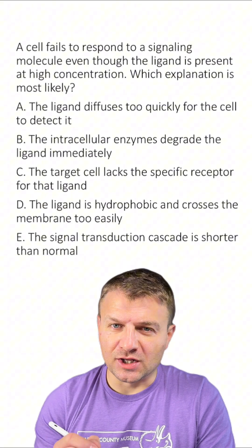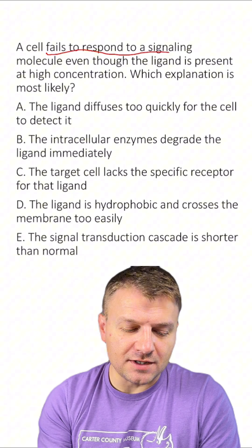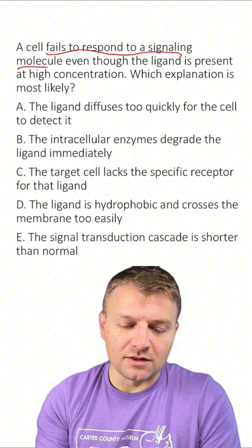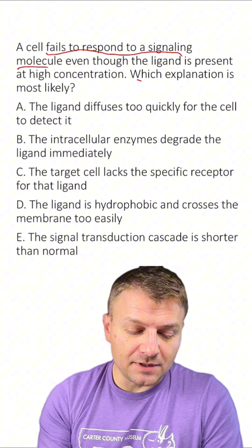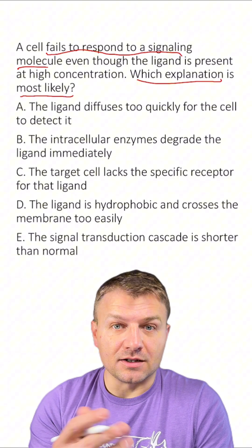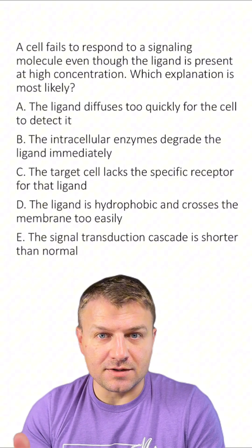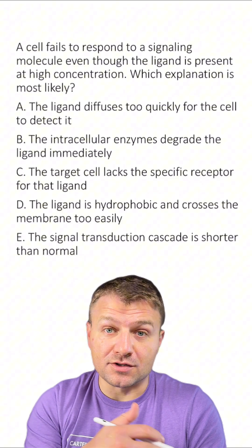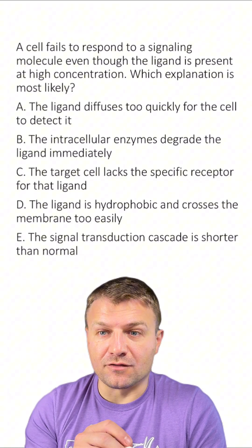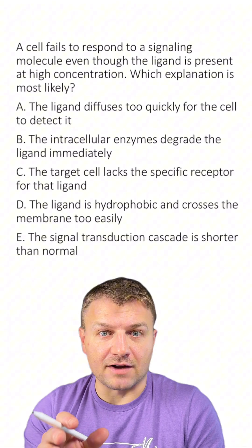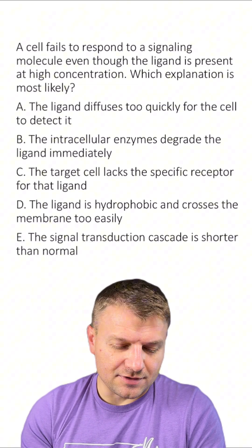Let's go over this multiple choice question about cell communication together. The question reads: a cell fails to respond to a signaling molecule even though the ligand is present at high concentration. Which explanation is most likely true? We're talking about ligands and cell responses. Remember that not every cell is going to have a receptor for a ligand — only certain cells will have receptors for these ligands.